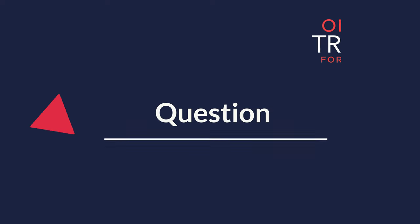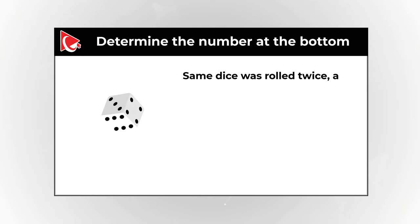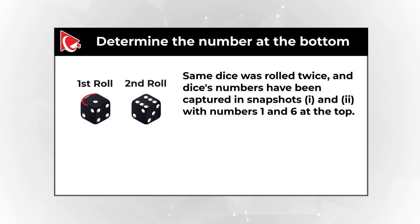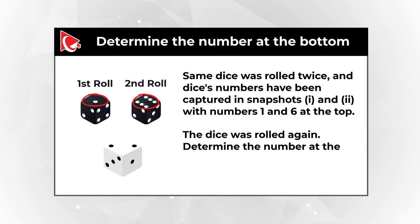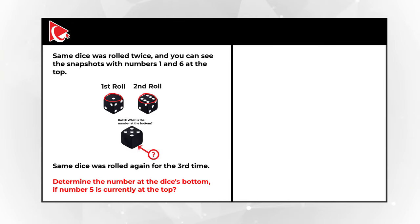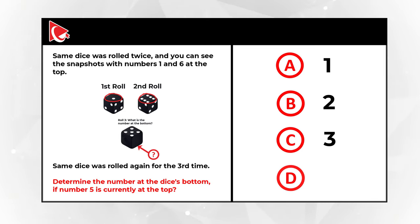Here's an interesting question where you need to determine the number at the bottom of a dice. The dice was rolled twice and snapshots 1 and 2 captured numbers 1 and 6 at the top. The dice was rolled again and you need to determine the number at the bottom if number 5 is currently at the top. Choices: A: 1, B: 2, C: 3, D: 6.